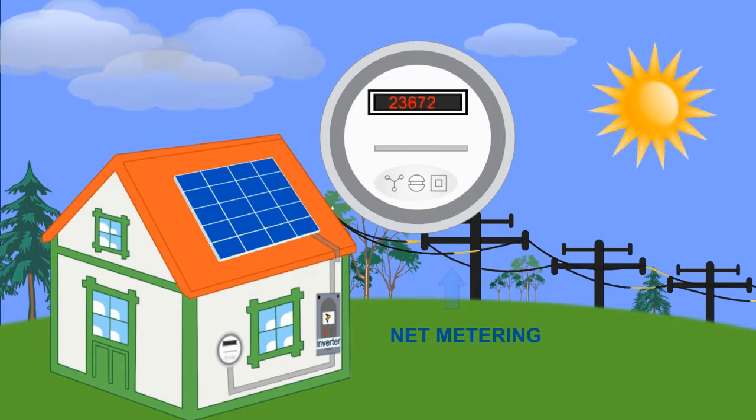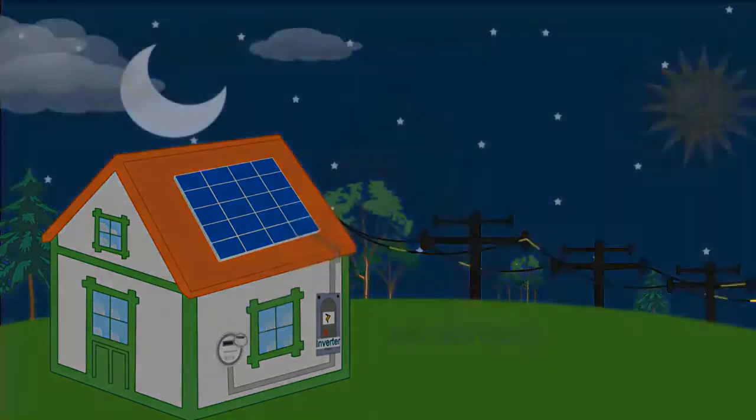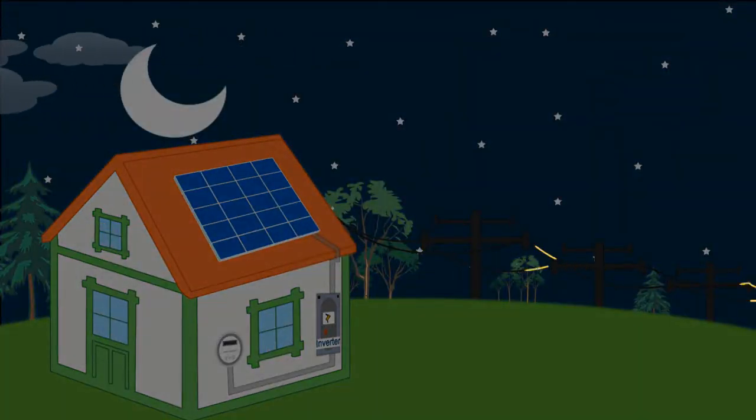Then, at night or on cloudy days when your solar system is not producing enough energy for your home, you will be able to draw power down from the grid, so you never have to worry about running out of electricity.